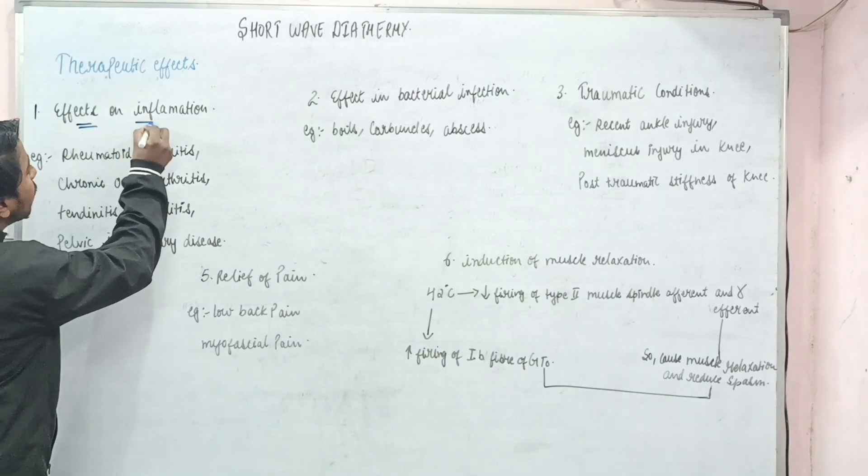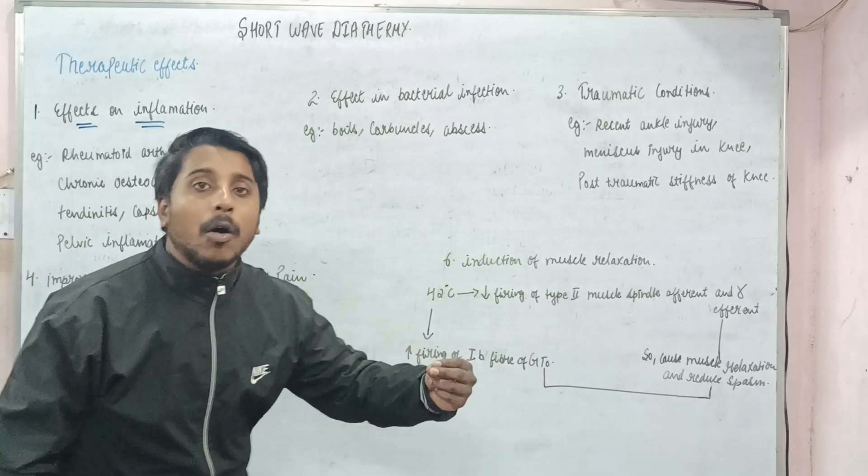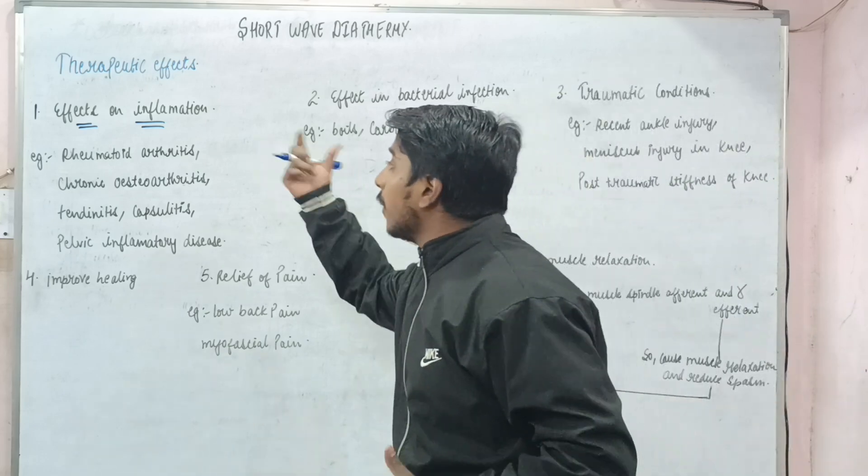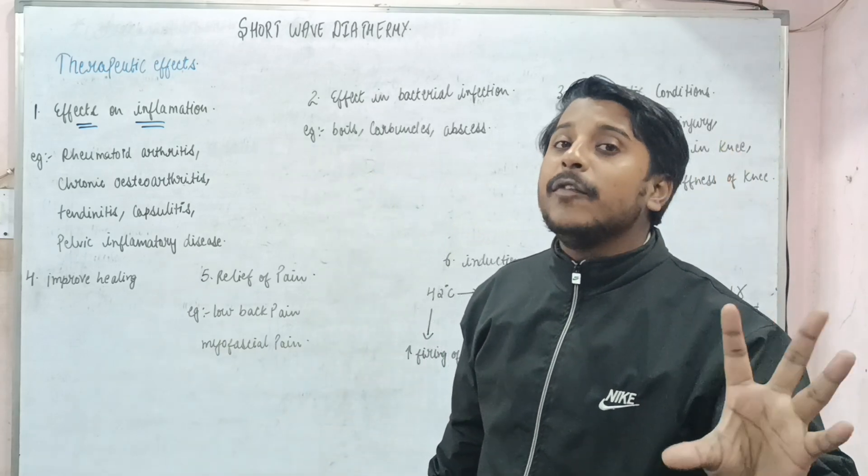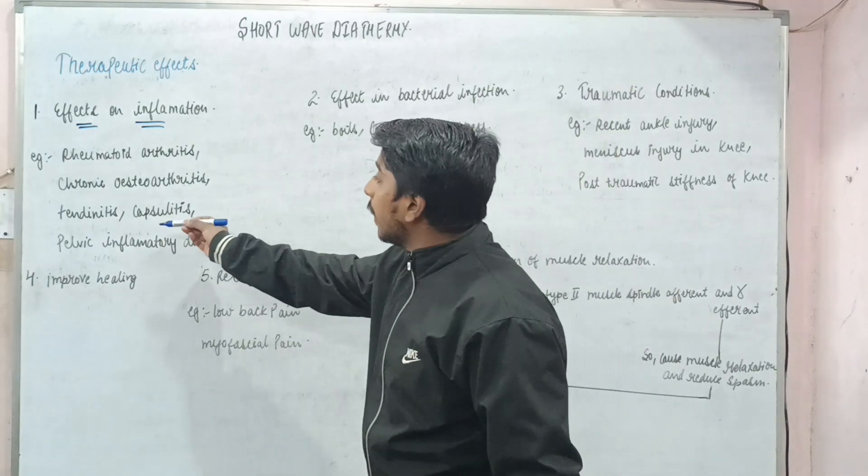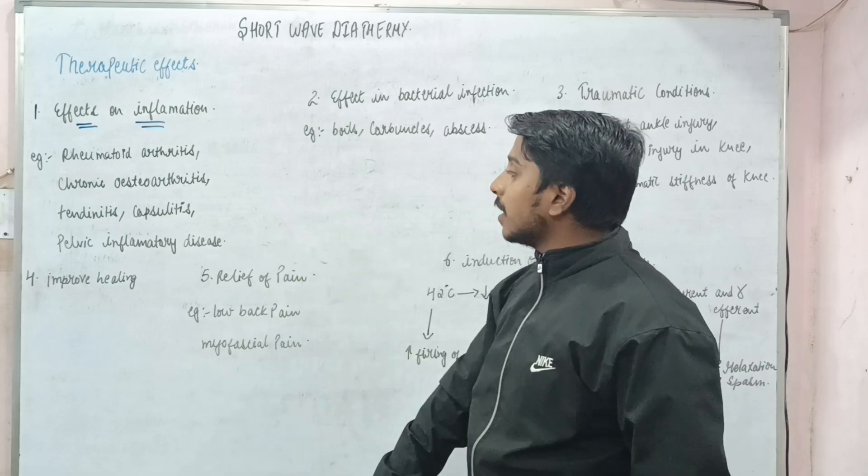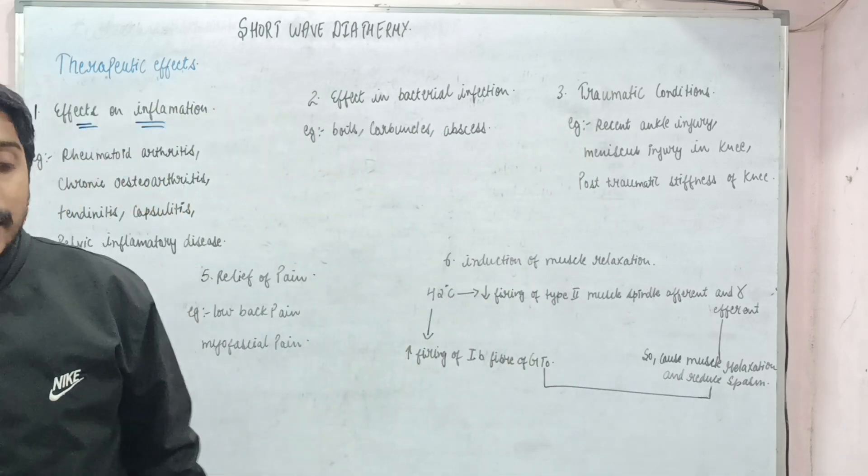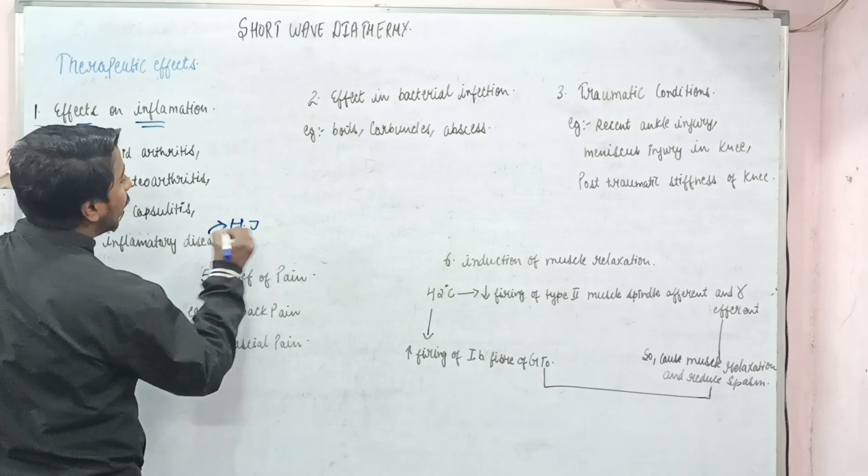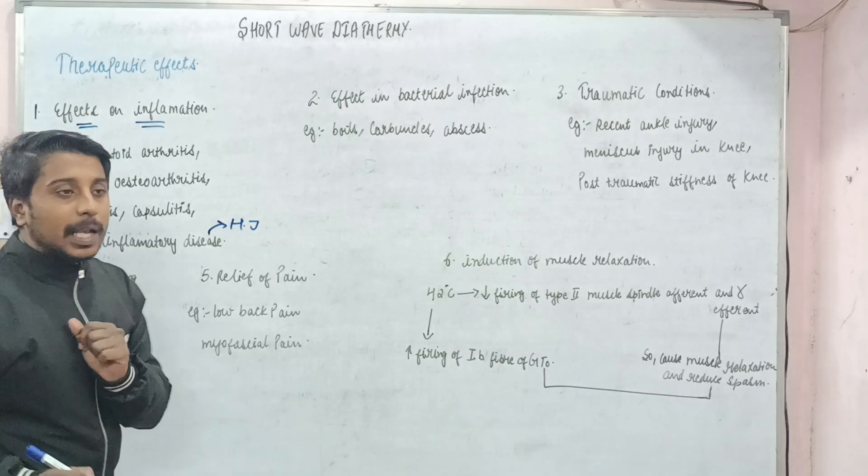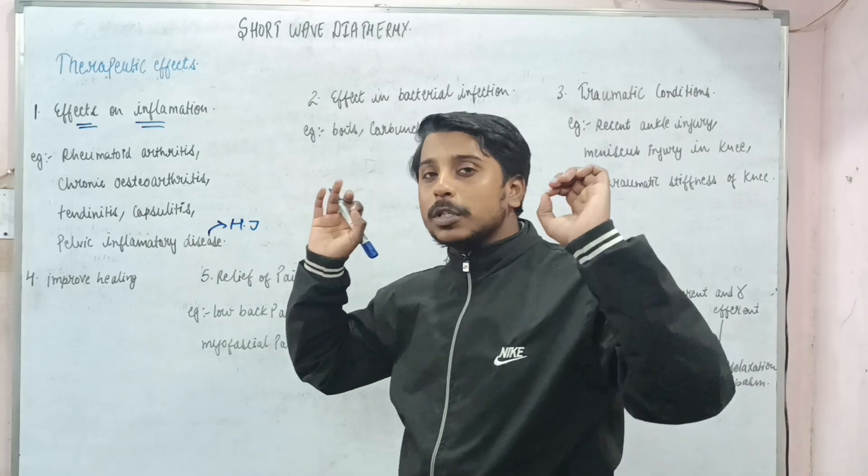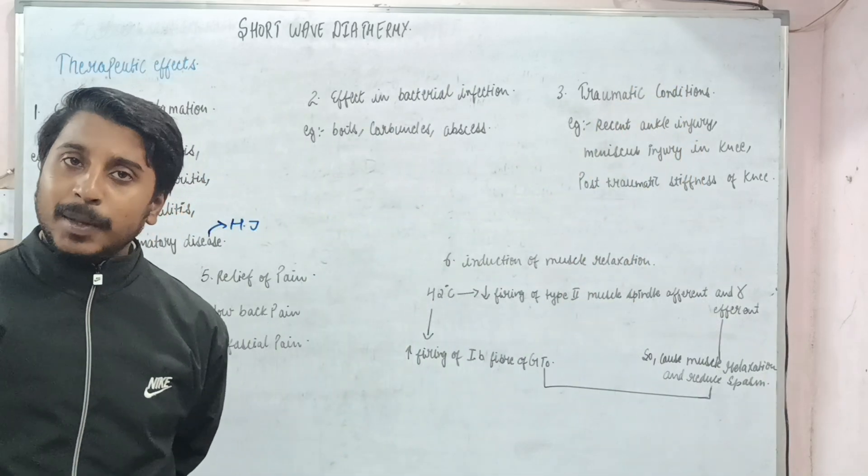The first effect is effect on inflammation - how shortwave diathermy is used therapeutically in various inflammations. First, let's see which inflammation I'm talking about: rheumatoid arthritis, any kind of tendonitis, capsulitis, or pelvic inflammatory disease related to the hip joint. In case of chronic inflammation, we're going to use shortwave diathermy as much as possible.